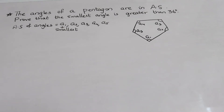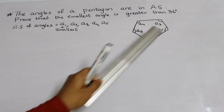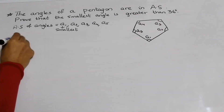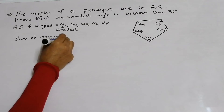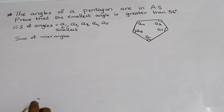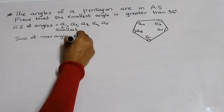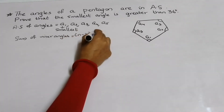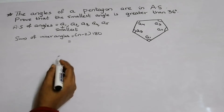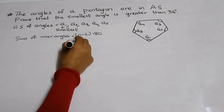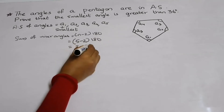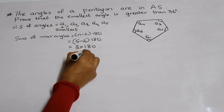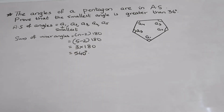What is the formula to find the sum of inner angles? The sum of inner angles is equal to (N − 2) × 180. Here N is 5, so it is (5 − 2) × 180, which is 3 × 180 = 540 degrees. This is the sum of all the interior angles of a pentagon.